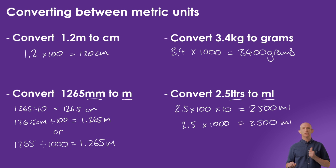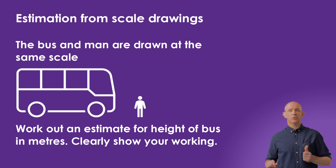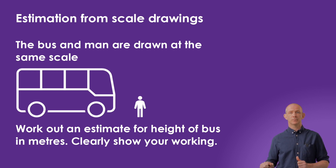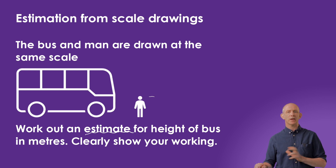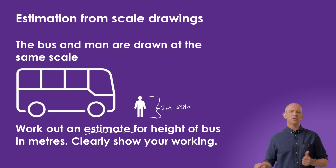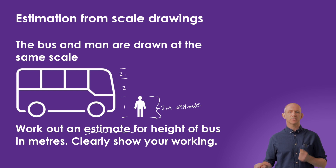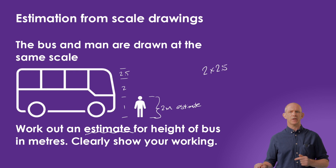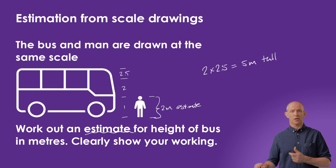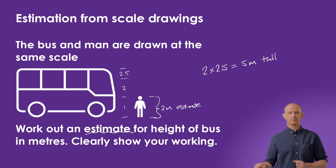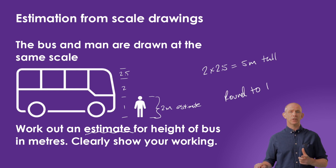In this question, the bus and the man are drawn to the same scale, and we're asked to estimate the height of the bus. The key word is 'estimate', which means we can round to one significant figure. Since we know the average man is closer to two meters, we use that as our known measurement. We can see by scaling up that the bus is roughly two and a half times the height of the man, so the bus is 2 × 2.5 = 5 meters tall. This type of question comes up often on foundation GCSE papers.